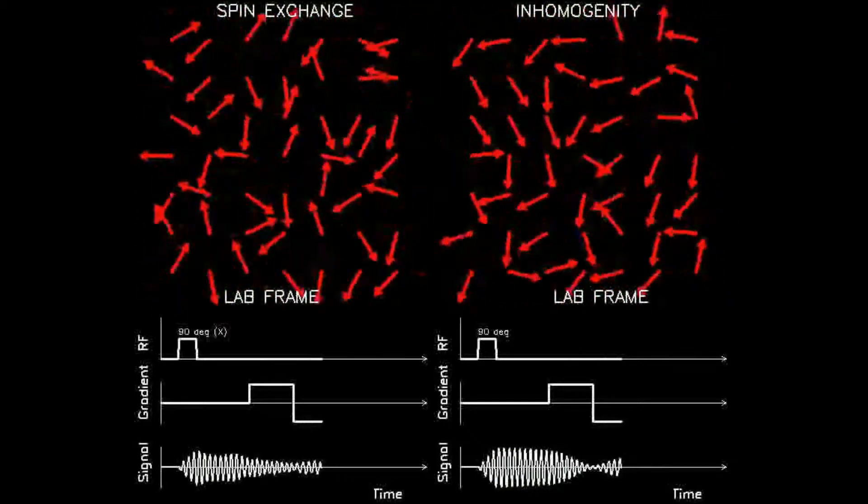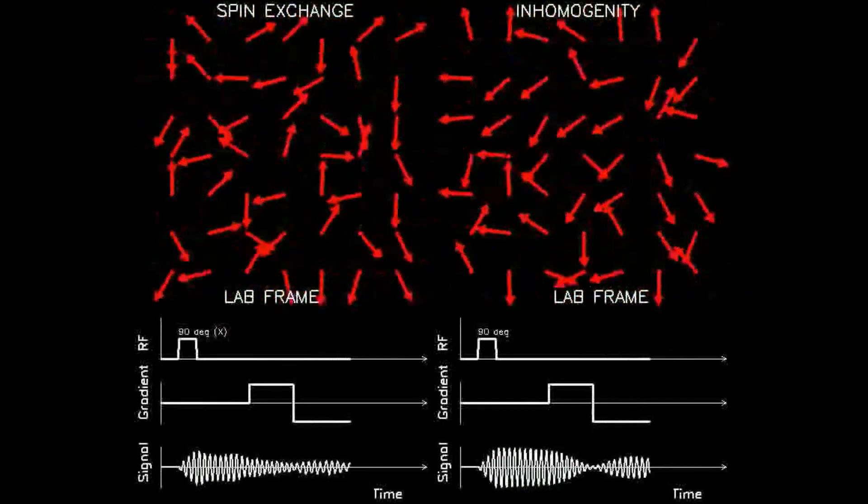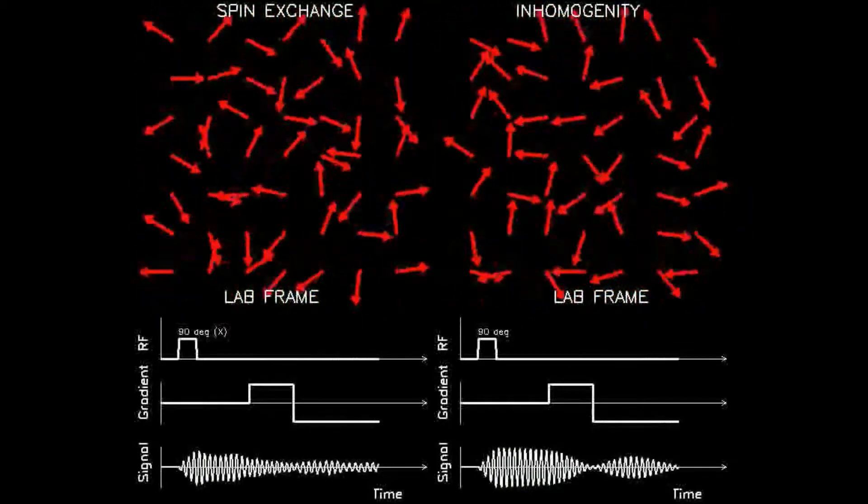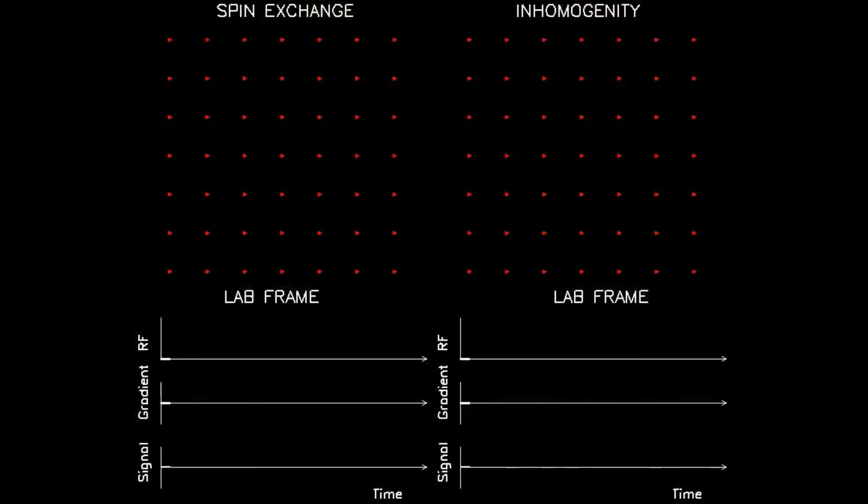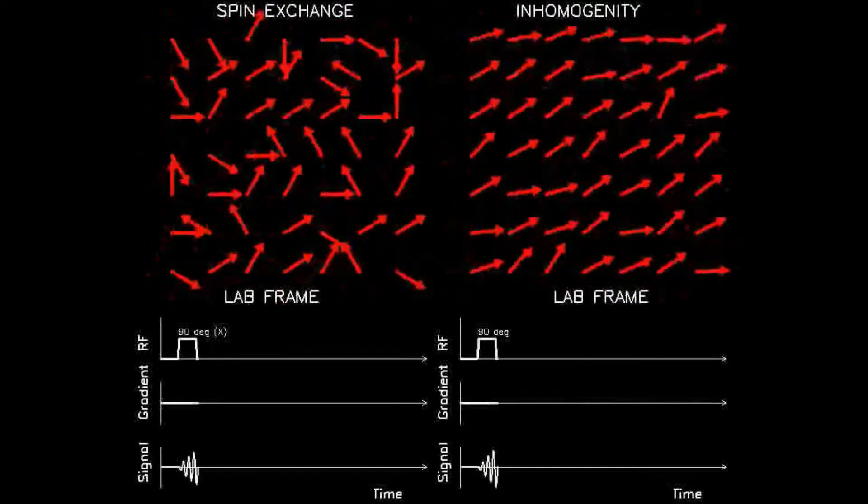The signal represented by the sinusoidal curve labeled signal diminishes very quickly. The gradient is then reversed, which in essence has the same influence on the rotating dipoles, although in the opposite direction.